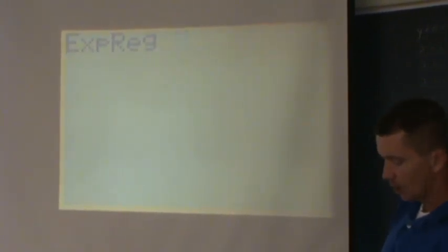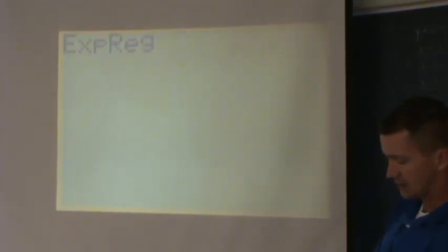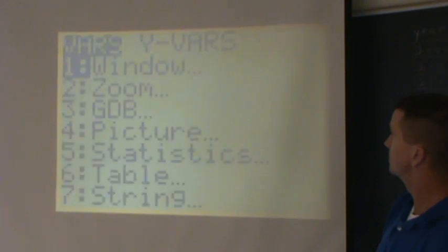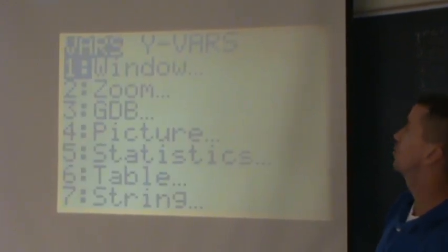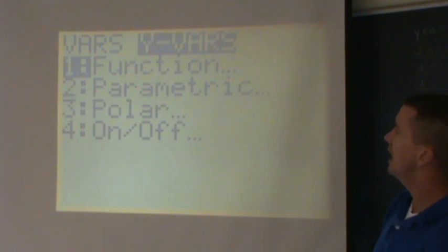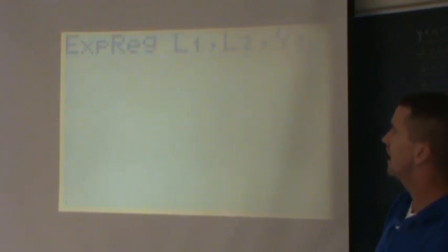I'm gonna hit now L1. This is located above the one button on the calculator. I'm gonna put a comma. I'm gonna hit L2. That's located above the two button. And after this, everyone, I'm gonna put another comma. And I'm gonna type vars. I'm gonna arrow over to y vars and I'm gonna hit enter, enter, enter.